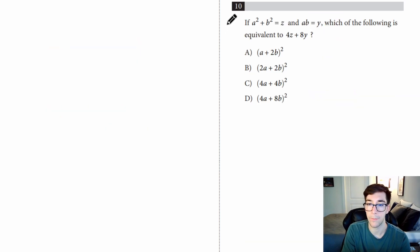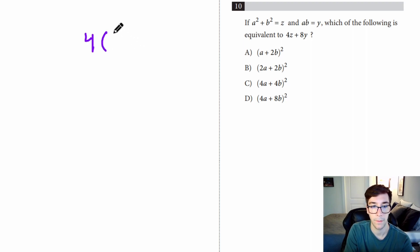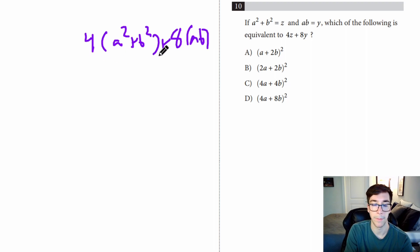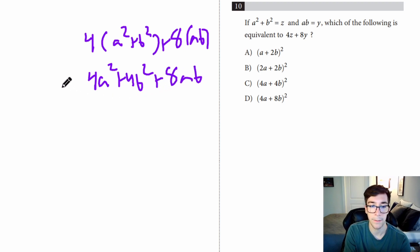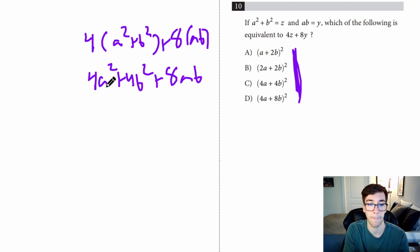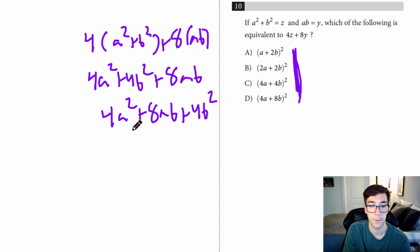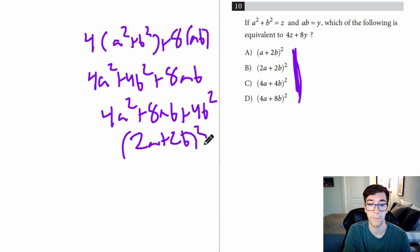Number ten: if A squared plus B squared equals Z and AB equals Y, which of the following is equivalent to 4Z plus 8Y? Z is A squared plus B squared, so we have 4 times (A squared plus B squared), and 8Y is plus 8AB. Simplifying gives 4A squared plus 4B squared plus 8AB. Rewriting as 4A squared plus 8AB plus 4B squared, this matches the form of (2A plus 2B) squared. So the answer is B.